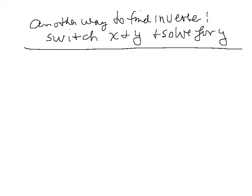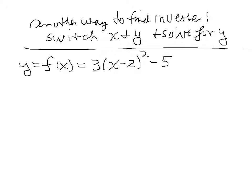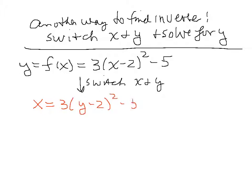Another way to find the inverse is to simply switch x and y and then solve for y. Let's look again at our example: f of x equals 3 times the quantity x minus 2, squared, minus 5. Since f of x is the same as y, if we switch x and y we get x equals 3 times the quantity y minus 2, squared, minus 5.